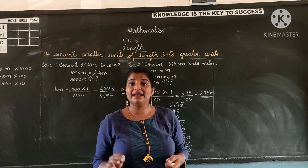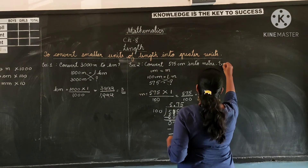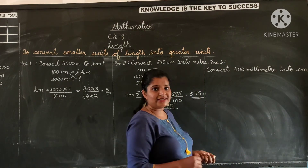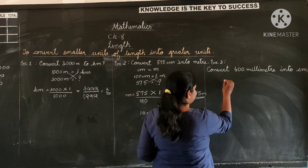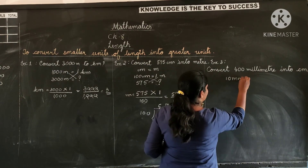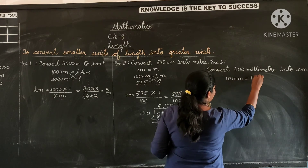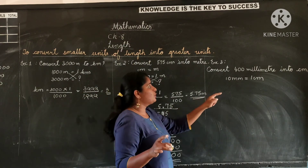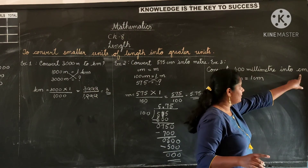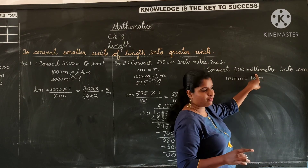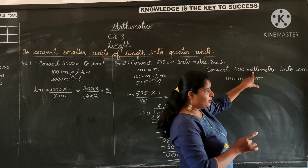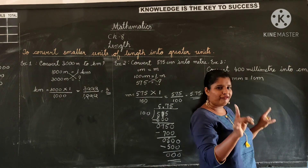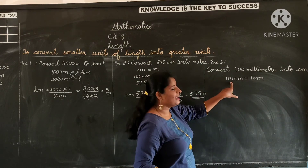Convert 400 millimeters into centimeters. First, let us write the relationship between millimeter and centimeter. We know that 10 millimeters equal 1 centimeter. As we have observed, to convert smaller units into greater units — here millimeter is smaller than centimeter — we have to divide the number by 10.